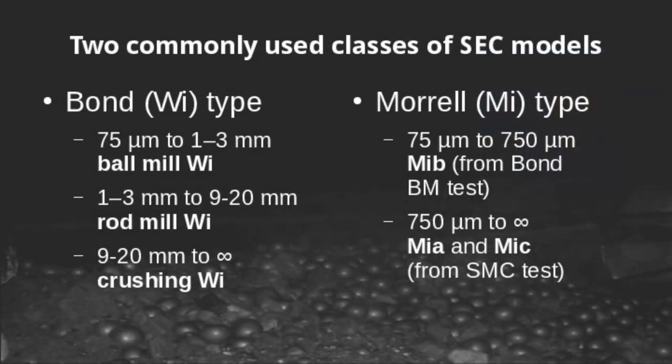The grindability models we use to do mill sizing generally fall into a couple of categories. The first category are the Bond-type models and the second category are the Morrell or MI-type models. The Bond-type models are generally based on the work index tests done in a laboratory. At the fine size class you have the ball mill work index test, at the intermediate size you have the rod mill work index test, and at the coarse feed size you have the crushing work index test.